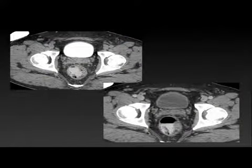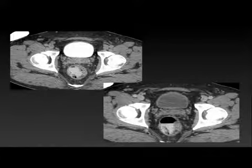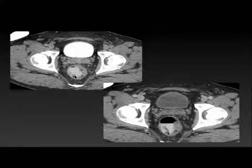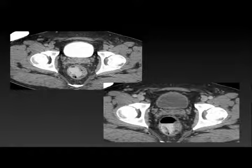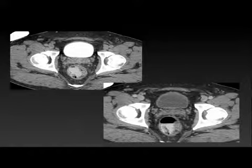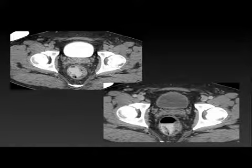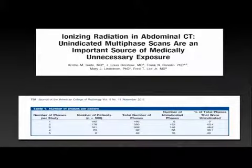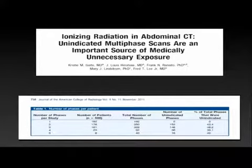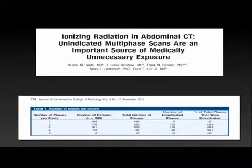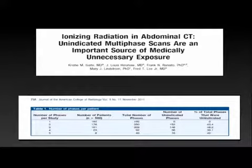Some practices like to image the pelvis after all the contrast gets into the urinary bladder, relating to how people grew up looking at the bladder using cystography and intravenous urography. I actually think you can see the bladder better without contrast in it — enhancing and mucosal-based lesions are seen more easily with non-enhanced urine in the bladder. Many practices have that additional delayed scan, but I don't think it adds much value.